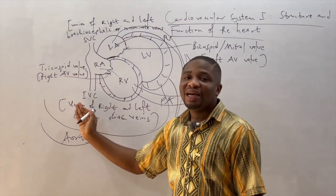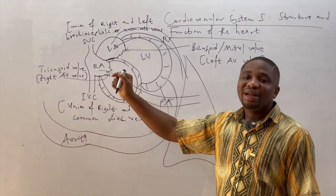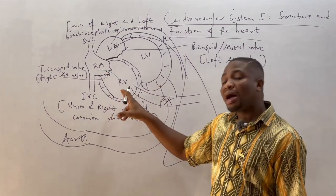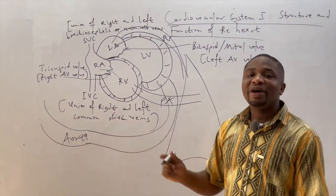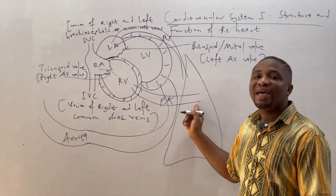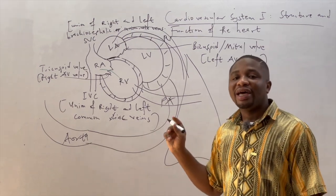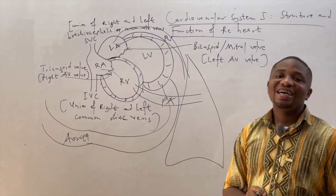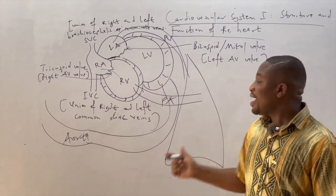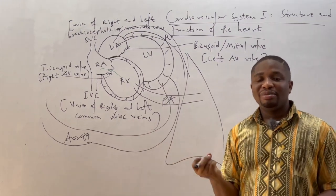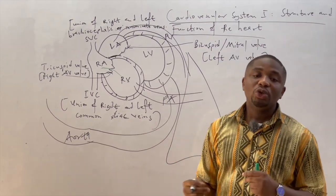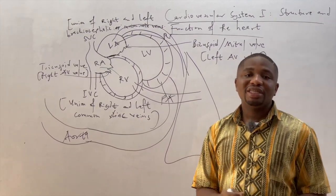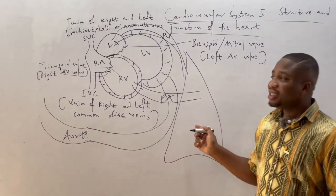The right atrium drains deoxygenated blood from the superior vena cava and the inferior vena cava. That deoxygenated blood is drained via the tricuspid valve into the right ventricle, and the right ventricle pumps the deoxygenated blood via the pulmonary artery into the lungs, where it is oxygenated in the alveoli, where gaseous exchange takes place. Carbon dioxide diffuses out of the blood and oxygen diffuses in, binding to hemoglobin to form oxyhemoglobin — that is called oxygenated blood.